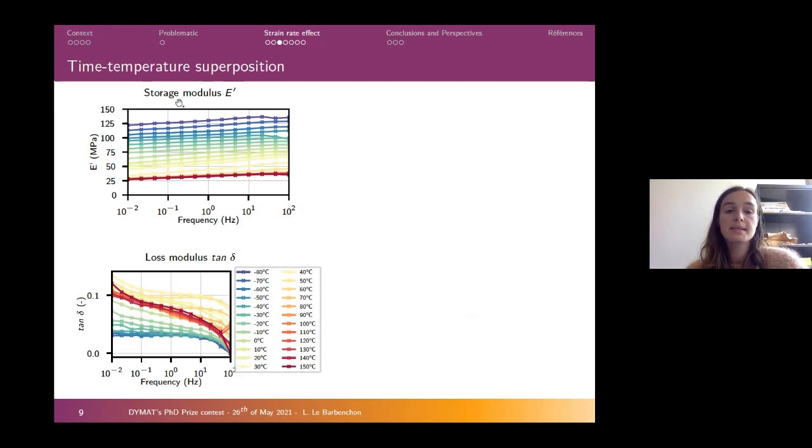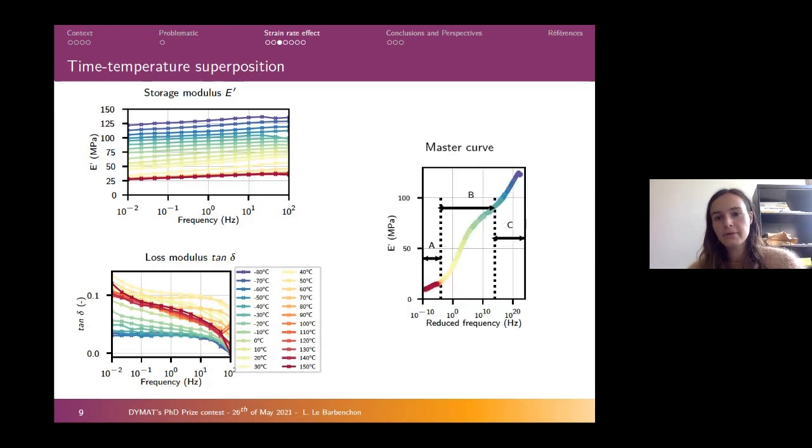Here you can see the DMA results for storage modulus and loss modulus at several temperatures with a frequency sweep. With this kind of curve, you can make a single curve named the master curve, here with the storage modulus. This kind of curve gives us the mechanical behavior under a really large range of frequencies.